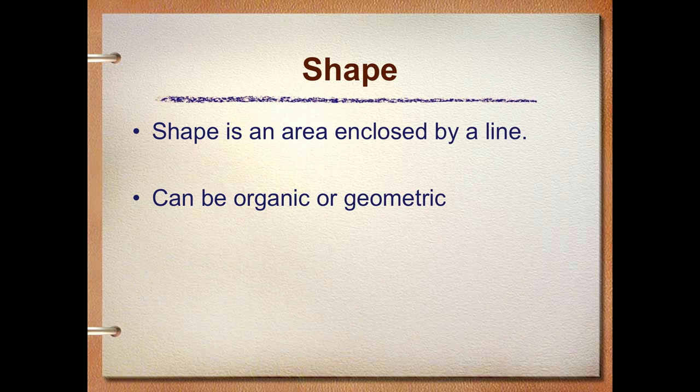You can find organic shapes in your science class. When you look through the microscope at an amoeba, you'll notice that its shape is certainly not like one you'd find in math class. It's a very organic shape that has rounded edges and moves around.